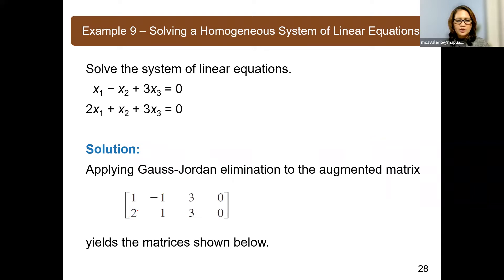We need to convert this to zero. So what happens if we multiply rho 1 by negative 2? Rho 2 becomes, so negative 2 plus 2, this becomes 0. Negative 2 times negative 1 is positive 2. 2 plus 1 becomes 3. 3 times negative 2 is negative 6 plus 3. This becomes negative 3 and 0. So we will have the new matrix, which is 1, negative 1, 3, 0, and 0, 3, negative 3, and 0.